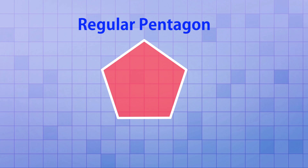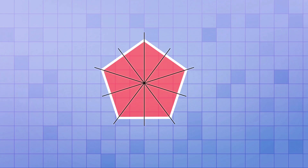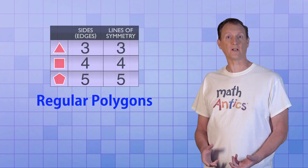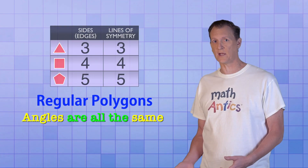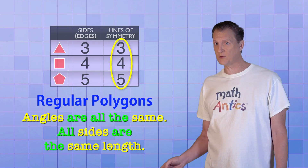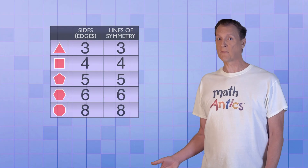Let's examine some other polygons. Here's a pentagon — specifically, a regular pentagon, meaning all of its angles are the same and all of its sides are the same length. It has five lines of symmetry. Have you noticed a pattern? The equilateral triangle has three sides and three lines of symmetry. The square has four sides and four lines of symmetry. The pentagon has five sides and five lines of symmetry. All regular polygons have the same number of lines of symmetry as they do sides. So a hexagon has six lines of symmetry and an octagon has eight.